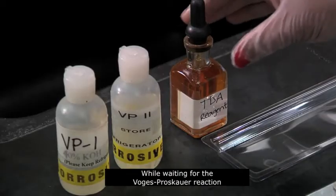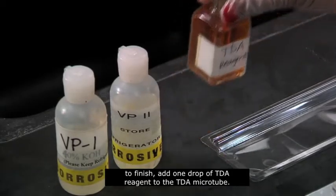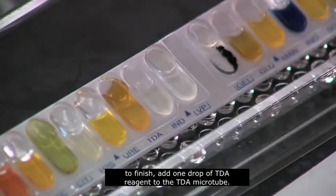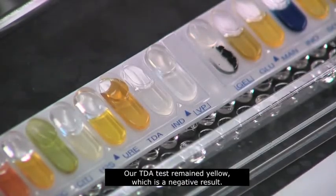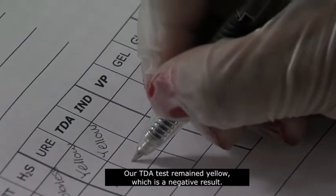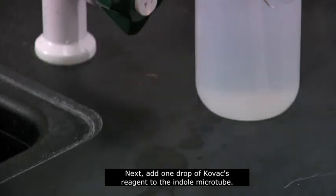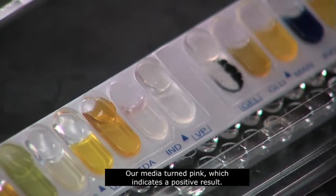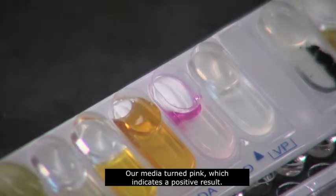While waiting for the Vogue-Proskauer reaction to finish, add one drop of TDA reagent to the TDA microtube. Our TDA test remained yellow, which is a negative result. Next, add one drop of COVAX reagent to the Indole microtube. Our media turned pink, which indicates a positive result.